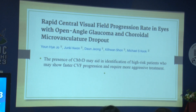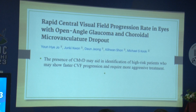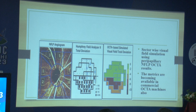Beyond superficial vessels, there is also a role for deeper vessel architecture. In the choroidal slab, microvascular dropout — if present — is associated with rapid central visual field progression, as shown in a study by Zoe et al.